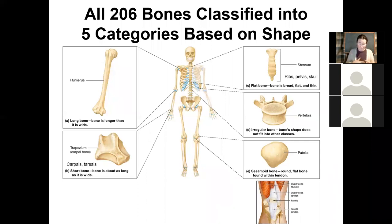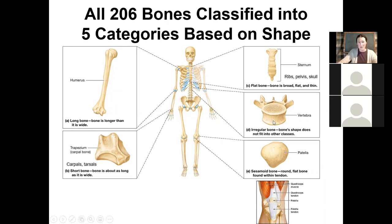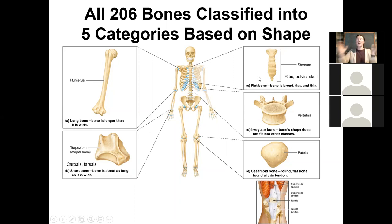Flat bones — we were already introduced to the sternum. These flat bones are essentially exactly that: they are very flat. We see these in our sternum and in our skull. We also have three other types of bones. First, we have the sesamoid bones — these are very rare in the body. For example, the patella, or your kneecap, is considered to be a sesamoid bone. A sesamoid bone is essentially a round, flat bone found exclusively within a tendon.